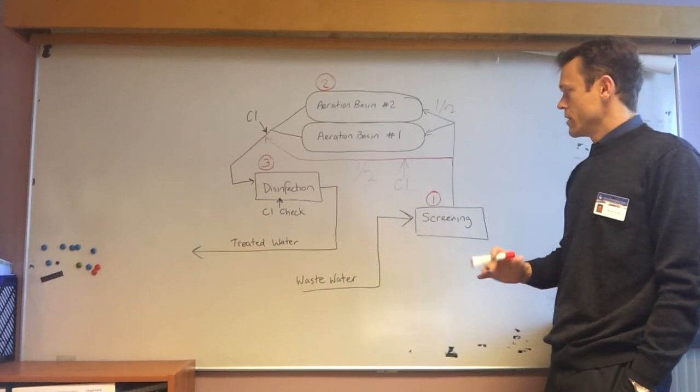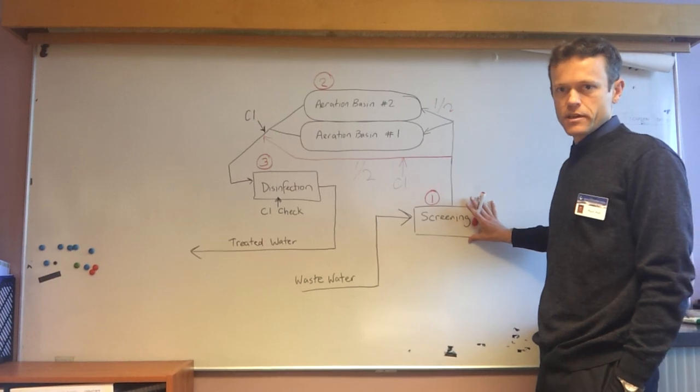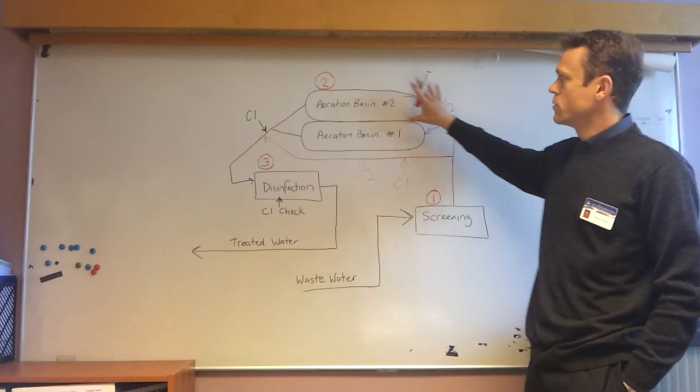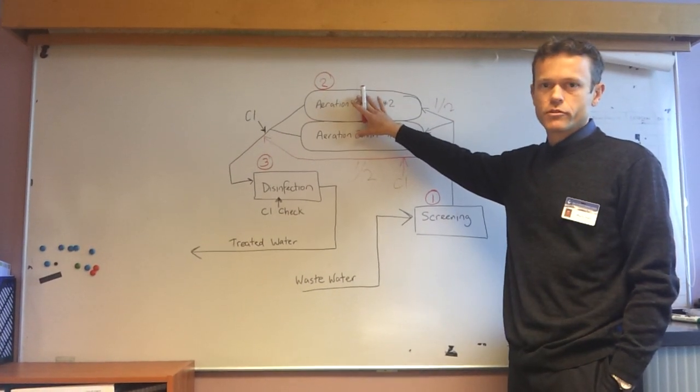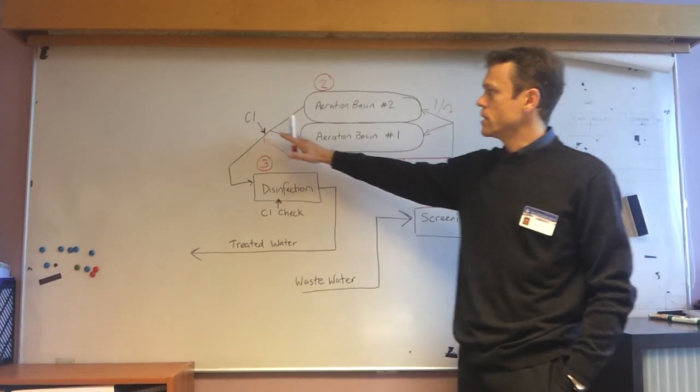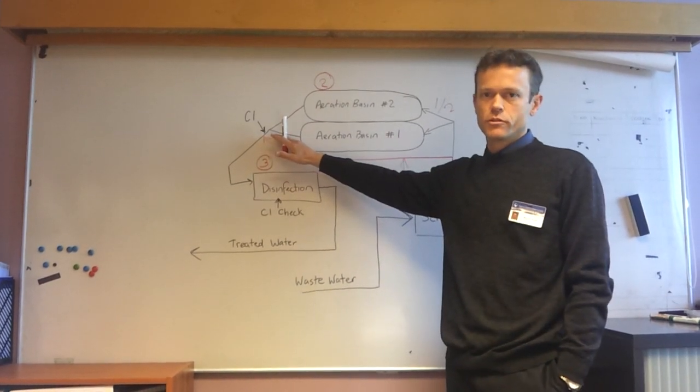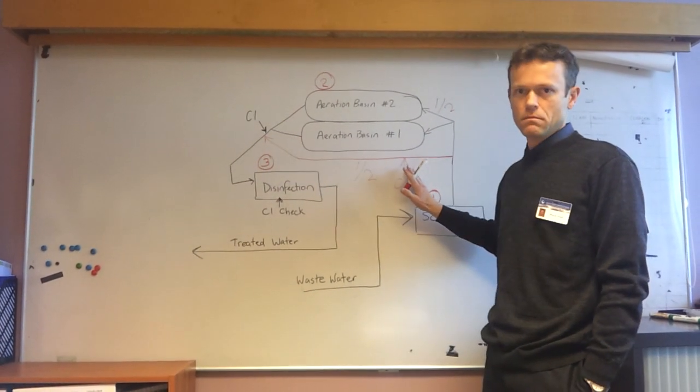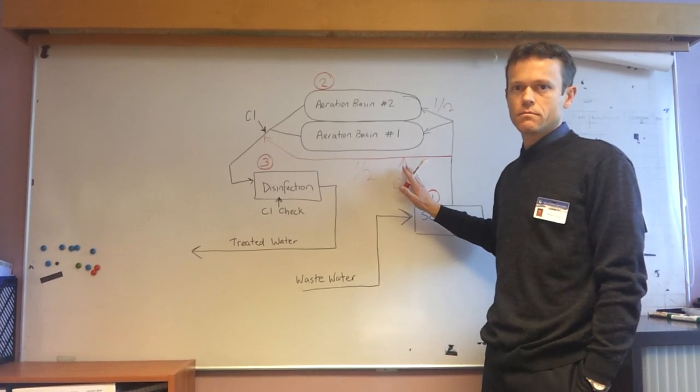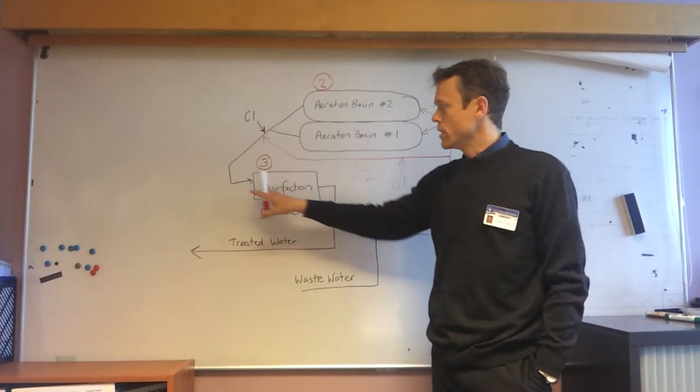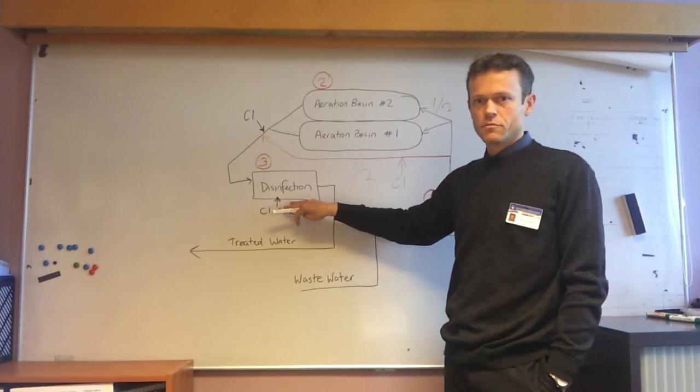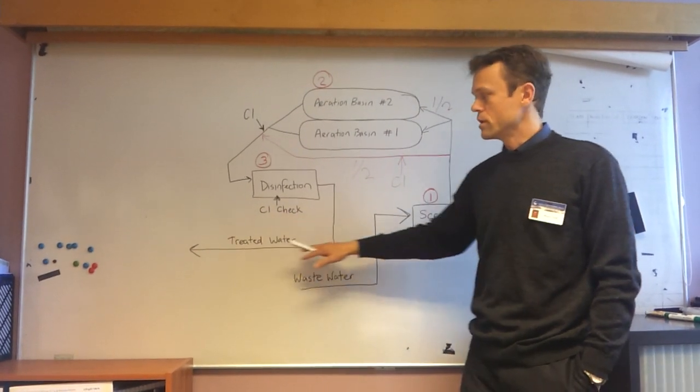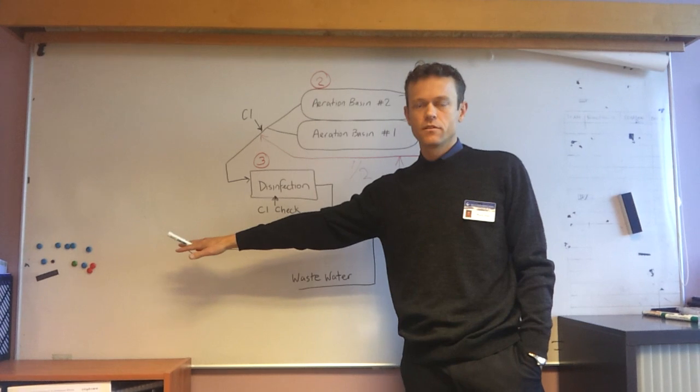So, in summary, all of the wastewater will go through the screening process. Half of the water will go through the biological treatment process. Half of the water will bypass the biological treatment process. However, it will have an additional chlorine dose. All of the water will then go through our disinfection process before that treated water is discharged to the sea.